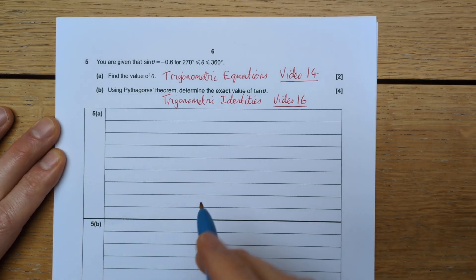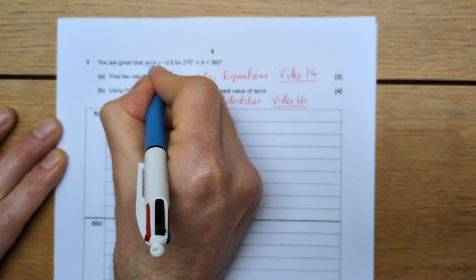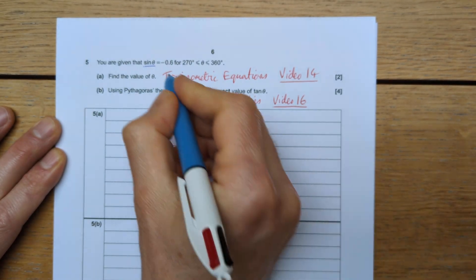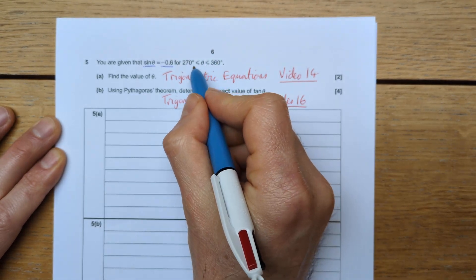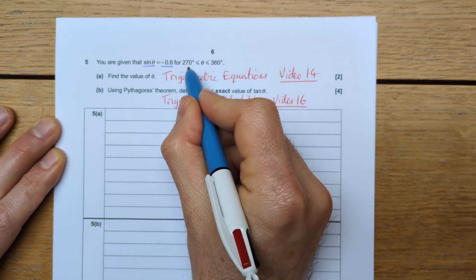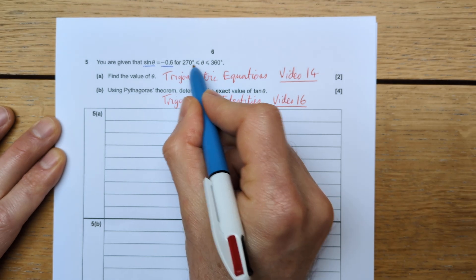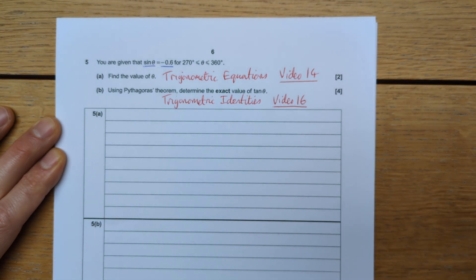So the first part, question 5A, is asking us to solve a trigonometric equation, a simple one with one trigonometric function equal to a specific value. It's asking to solve it in a specific region. So the angle is between 270 and 360 degrees, so we need to find our answer in that region.